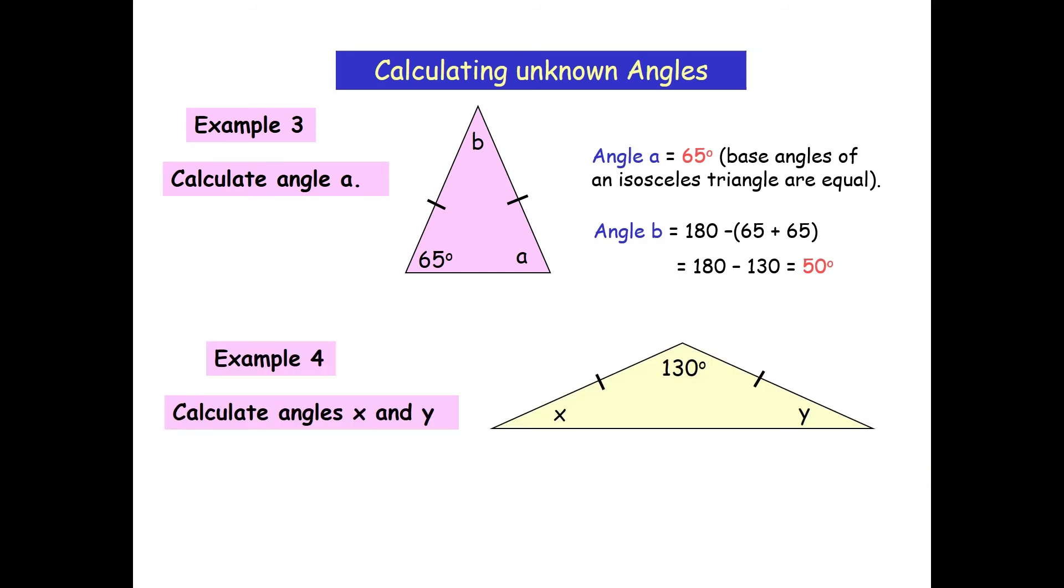And my final example, example four, the top angle is 130. Again, I know this is an isosceles triangle. So that means X and Y are going to be the same size. So first of all, I need to take 130 away from 180, which leaves me with 50 degrees. And then I divide that by two or half it, which means both X and Y are 25 degrees.